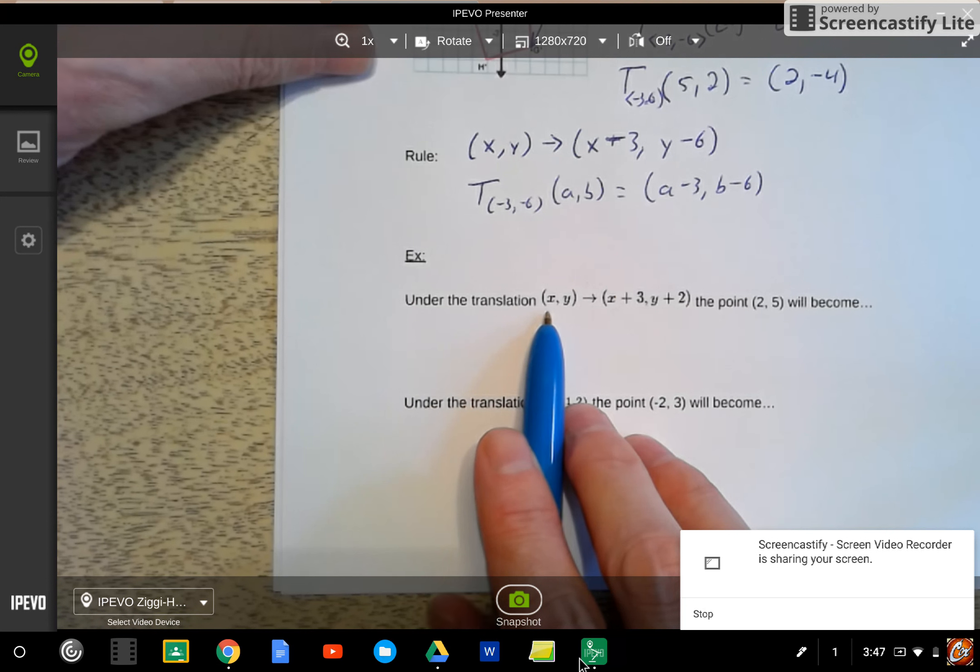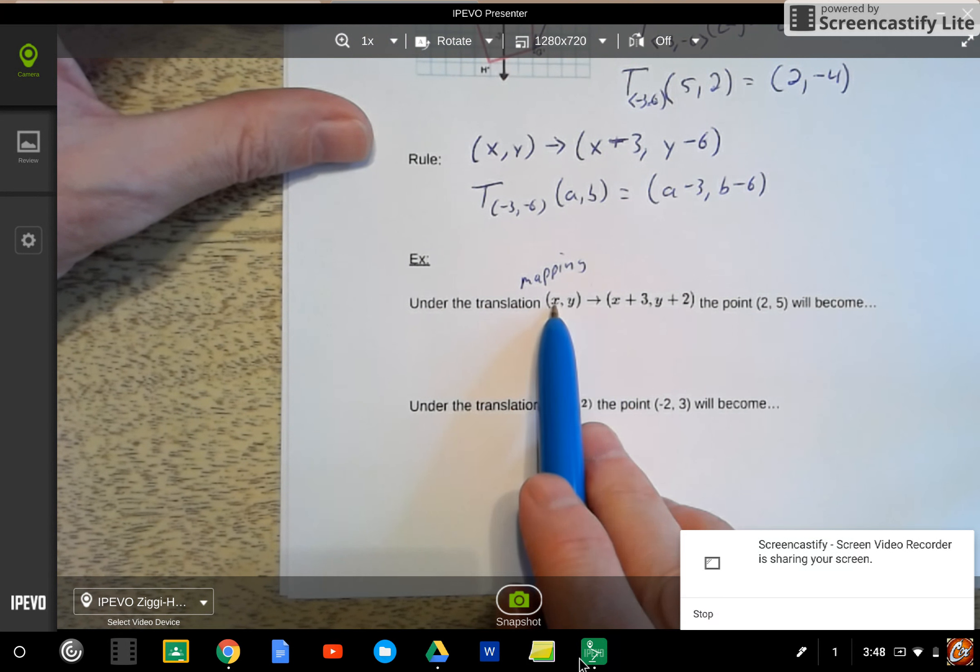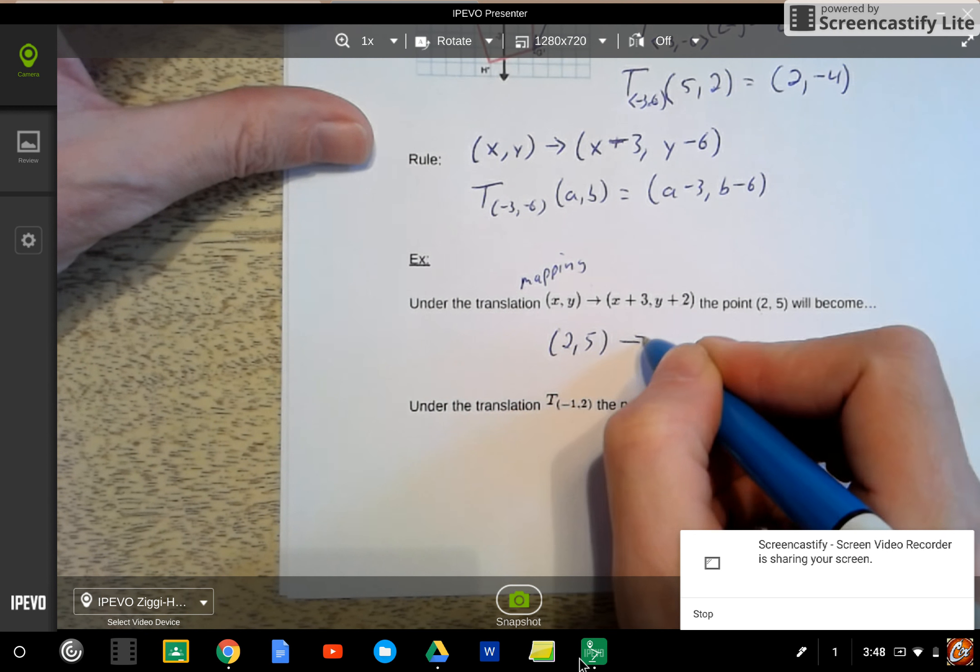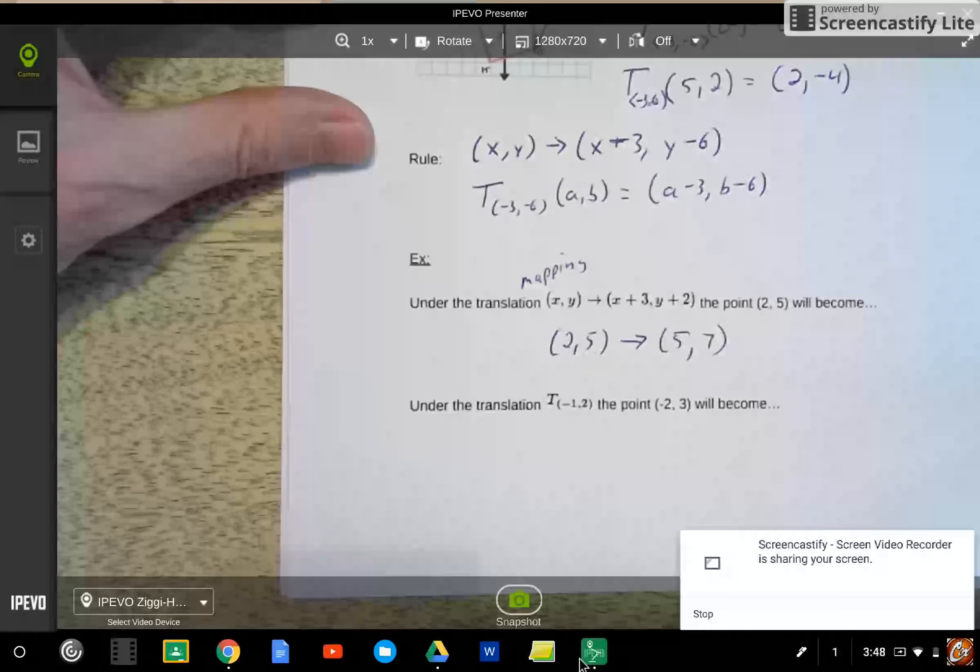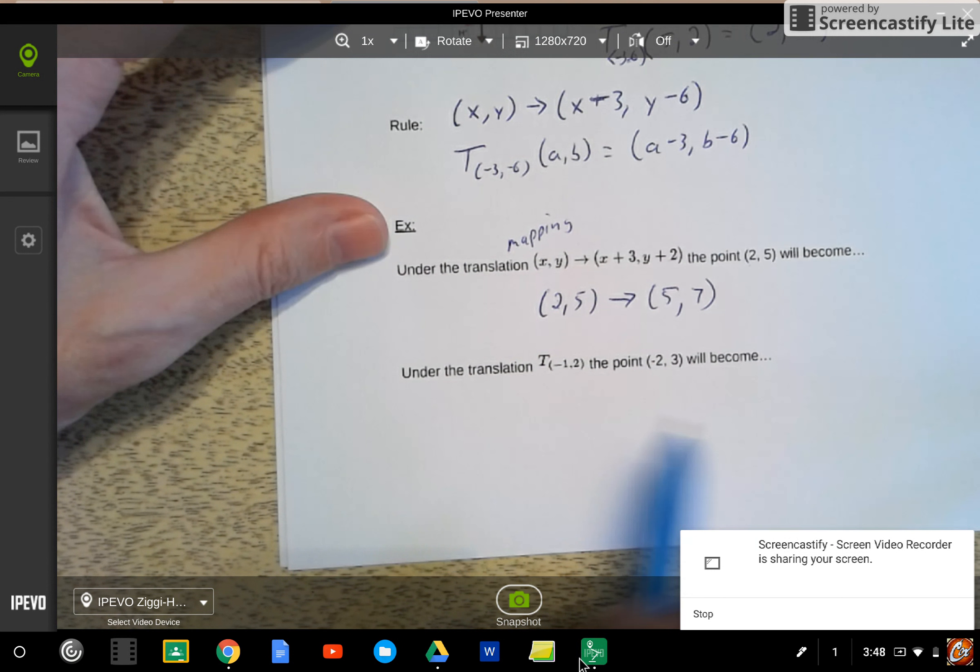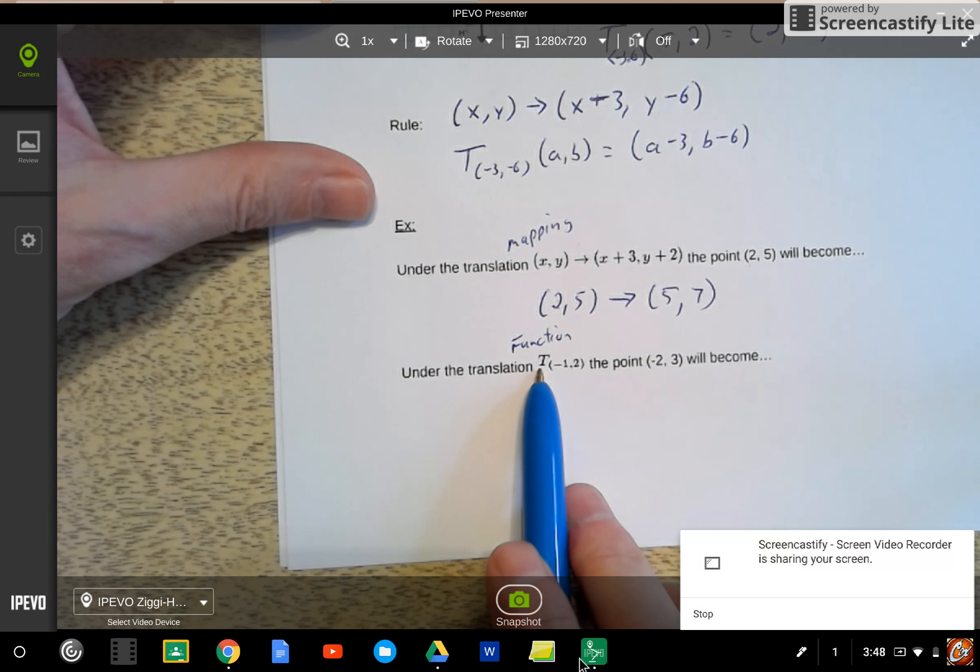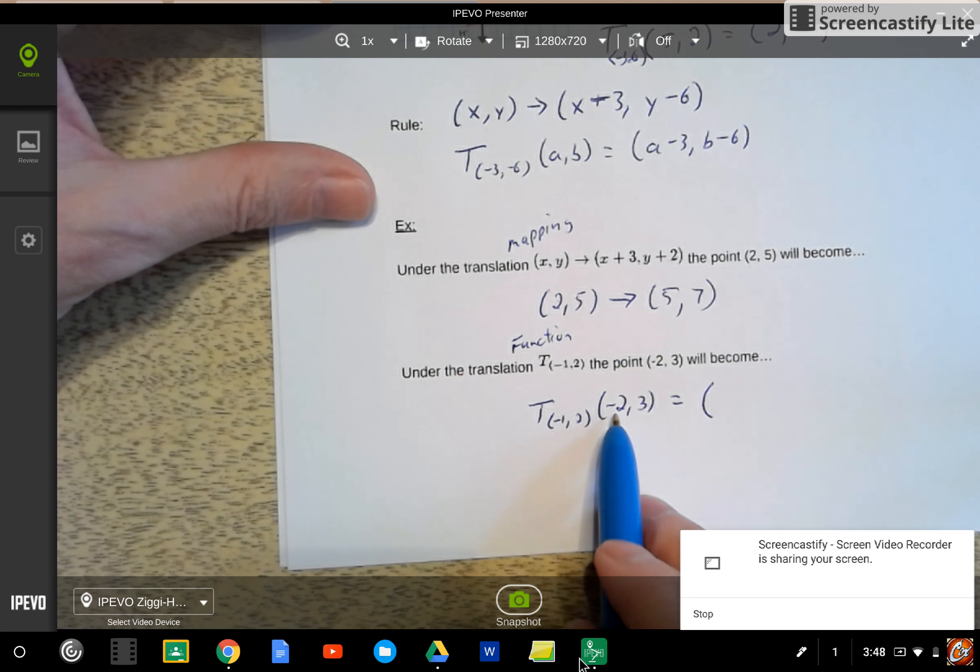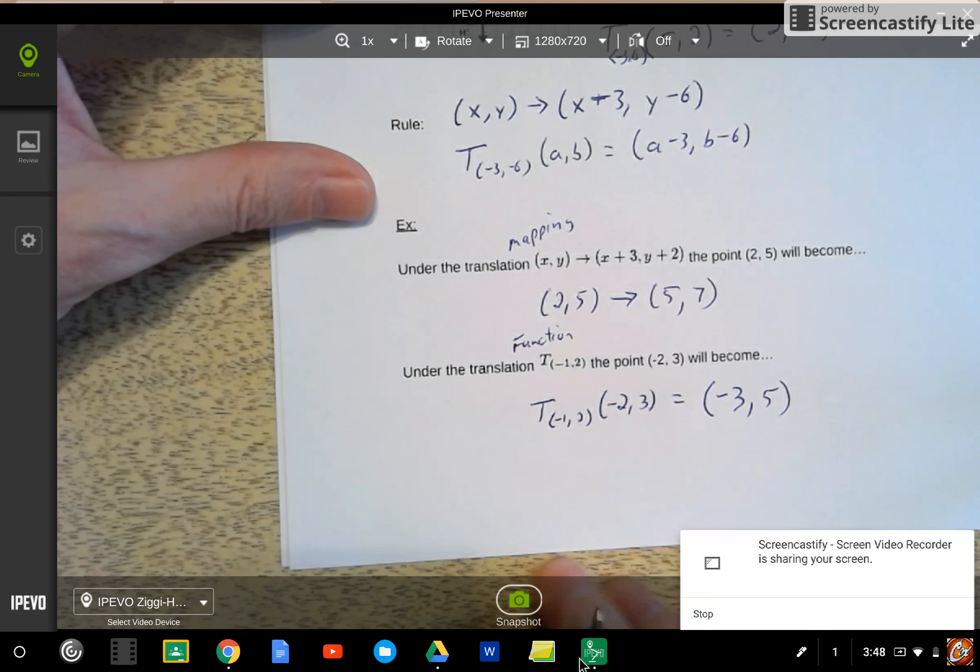So a first example. Here's one written in that mapping way. This is called a mapping. So that means that I'm going to take each of my x, y's. I'm going to add 3 to the x, 2 to the y. So the point (2, 5) becomes 2 plus 3 is 5, 5 plus 2 is 7. There's our answer. A different way to look at it. Here we're writing it in what's called function notation. So function notation says take this translation of this point. So the translation of negative 1, 2 of the point negative 2, 3 will give me negative 2 plus a negative 1 is negative 3, 3 plus 2 is 5. And that's it. Simple as that.